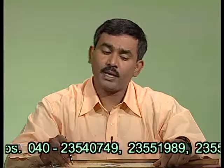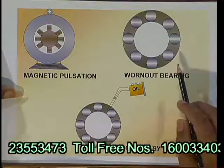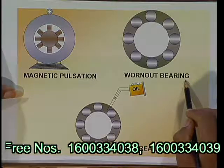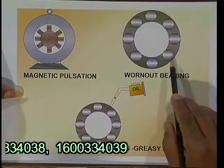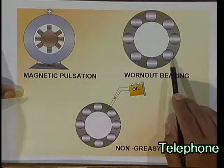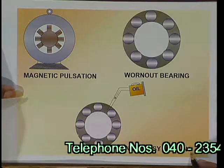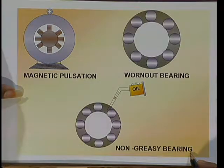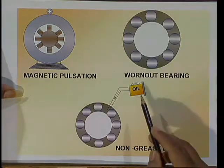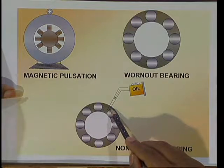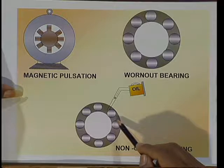Noise due to magnetic pulsation can be reduced by selection of the correct number of slots. Noise due to worn-out bearings can be reduced by replacing the bearing with a new one. Noise due to non-greasy bearings can be reduced by pouring oil or replacing the old grease with new grease. These are some reasons for production of noise and the methods for reduction of noise.